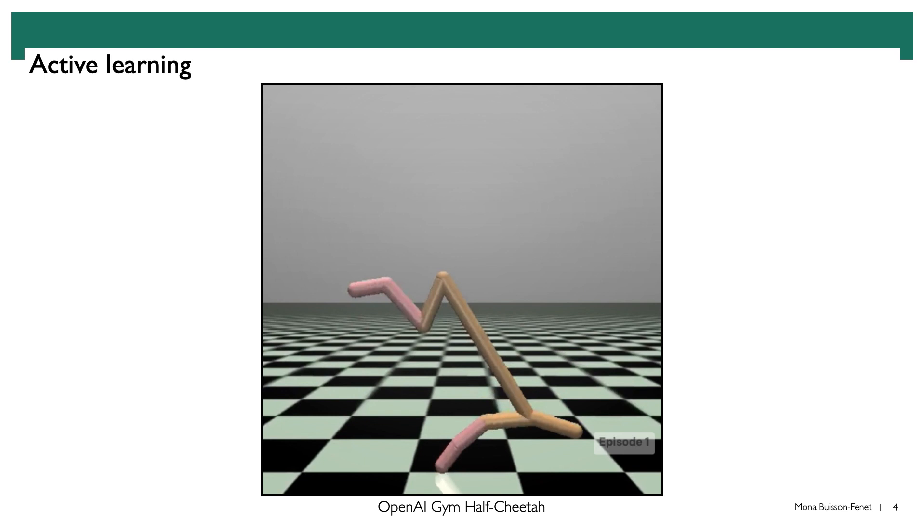This is an unseen data point. It is not in our data set yet. Therefore, it is highly informative. It will teach us a lot about the behavior of the system. So let's just sample that.